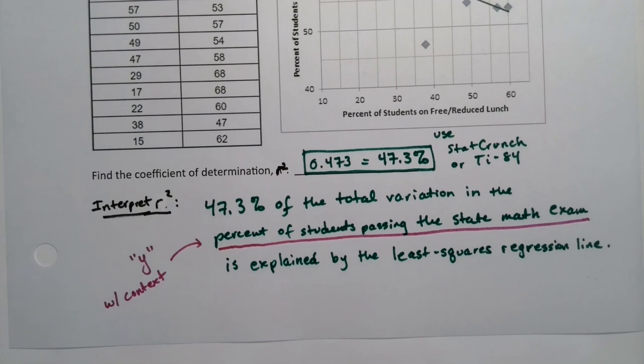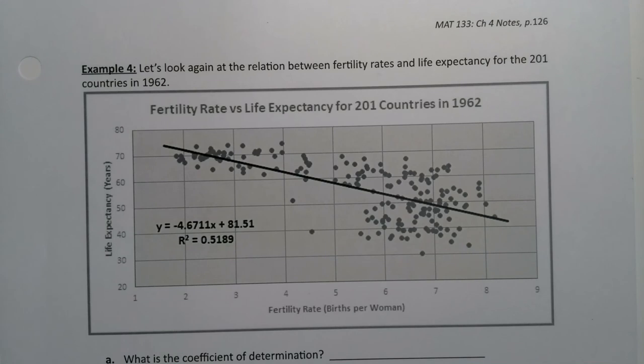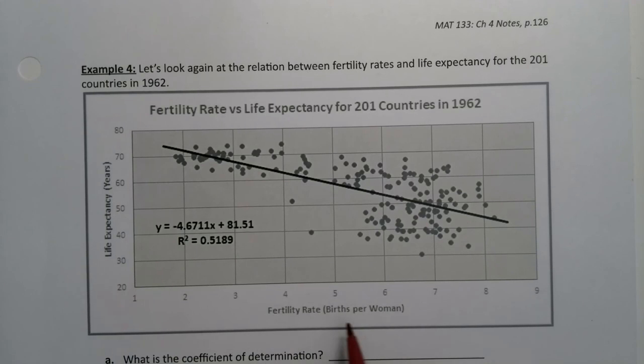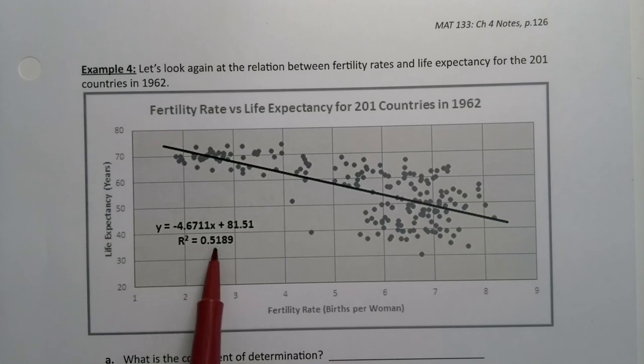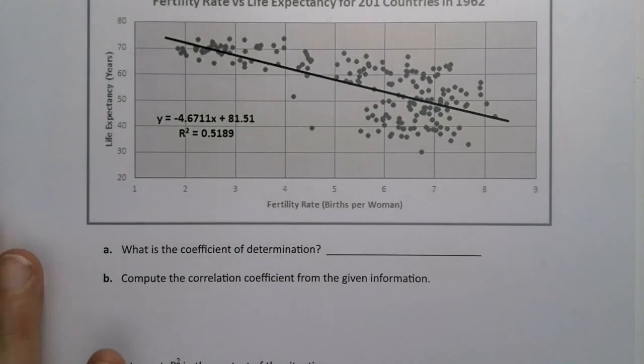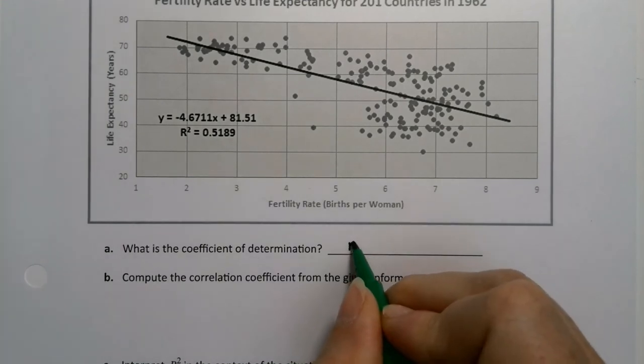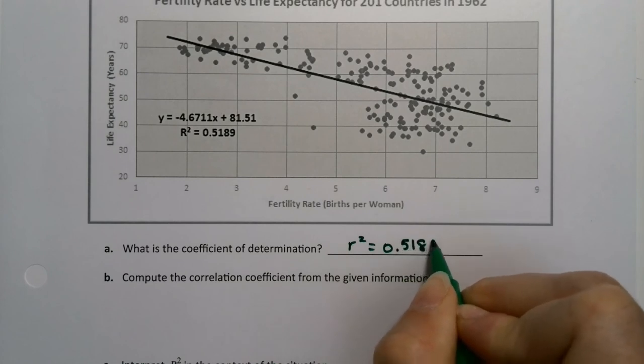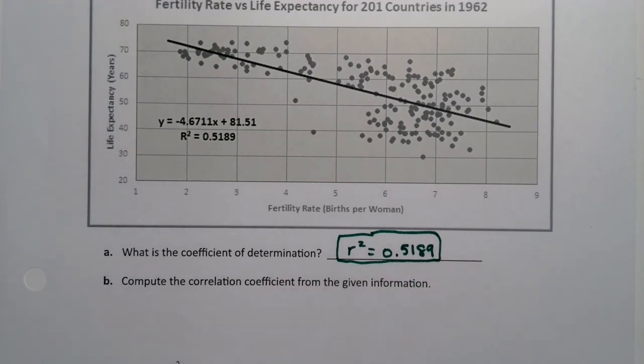Let's do it again but for the other problem that we saw in Section 4.1. We've seen the free-reduced lunch one before, but we've also seen this one with the fertility rate and life expectancies from 1962. So we have our fertility rate here, which is births per woman, and our life expectancy here. And you'll notice that they gave us R-squared right there. R-squared is .5189. Isn't that nice? So that's the coefficient of determination. The coefficient of determination is .5189.